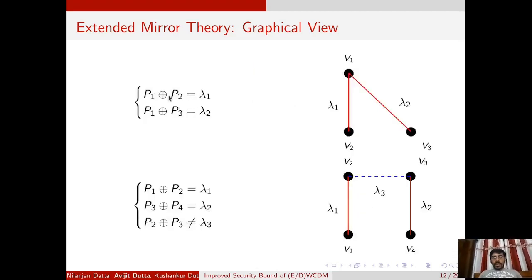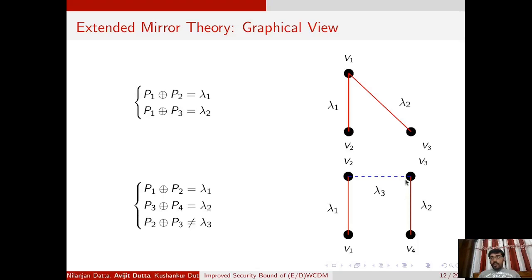As an example: if we have the equation p1 + p2 = λ1, we put a solid red edge between vertices v1 and v2 with label λ1. If we have p1 + p3 = λ2, we put another edge between v1 and v3 with label λ2. Similarly, if we have a non-equation p2 + p3 ≠ λ3, we put a dashed blue edge between v2 and v3 with label λ3. In this way, we can cast a system of equations and non-equations into an equivalent graph.